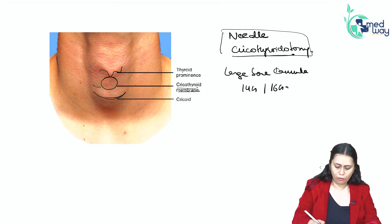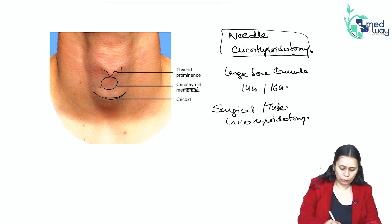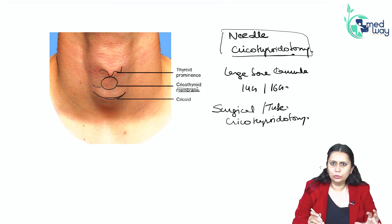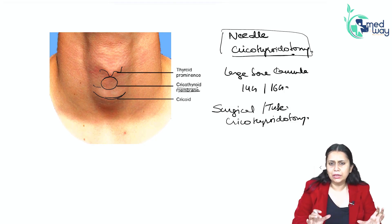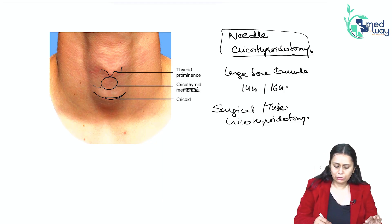We can also go for surgical cricothyroidotomy, also called tube cricothyroidotomy. In this, we use a set through which we insert through the cricothyroid membrane and properly put a smaller size endotracheal tube through it. So this is cricothyroidotomy done in emergency.